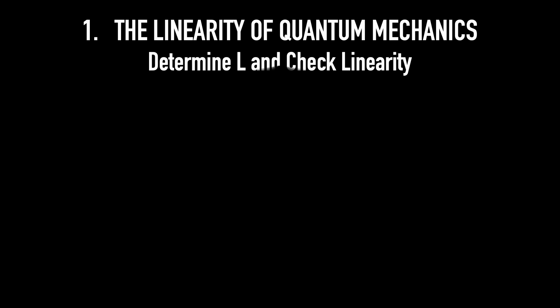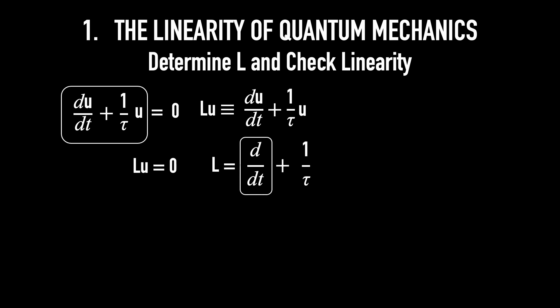Determine L and check linearity. Let's look at this equation: dU over dt plus 1 over tau U equals 0. If we define LU equal dU over dt plus 1 over tau multiplies U, then this equation can be written as LU equals 0. How do we write L on its own? Structurally, we can express it as L equals d over dt plus 1 over tau. Here, d over dt is the derivative operator, and 1 over tau simply multiplies U.